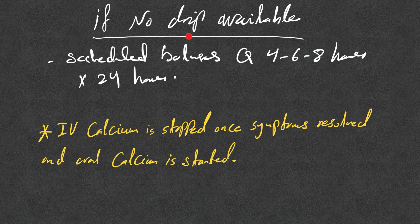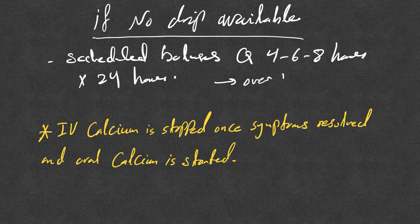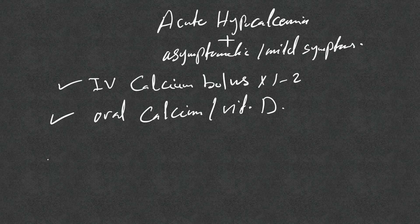If a calcium drip is not available, use scheduled boluses every four, six, or eight hours over 24 hours. The infusion can also be slowed — given over one to two hours instead of ten minutes — for a more sustained rise. IV calcium is stopped once symptoms resolve and oral calcium is started.